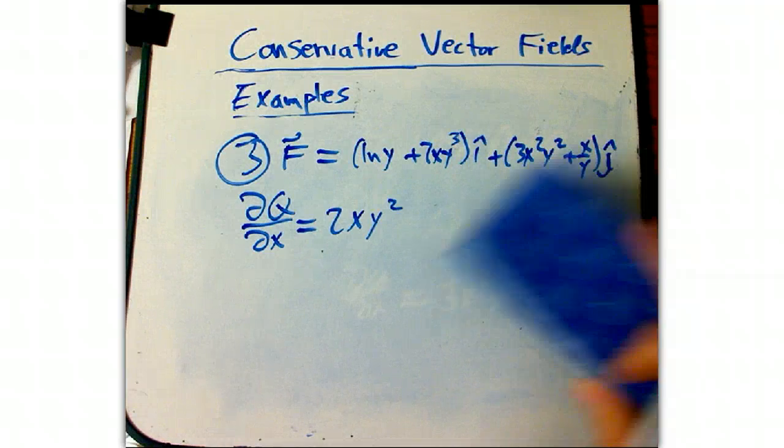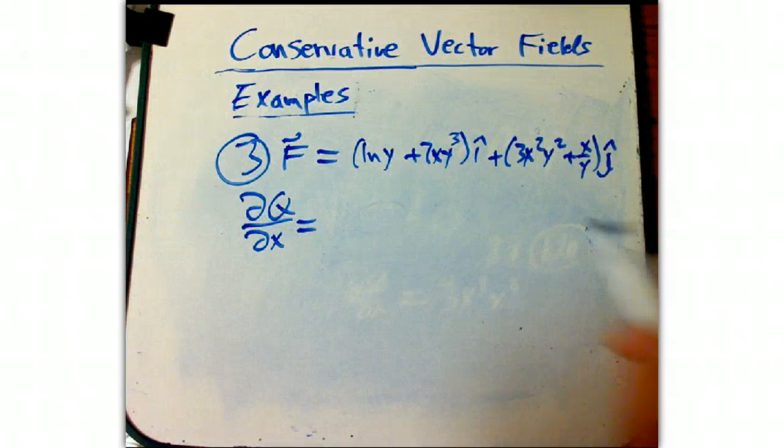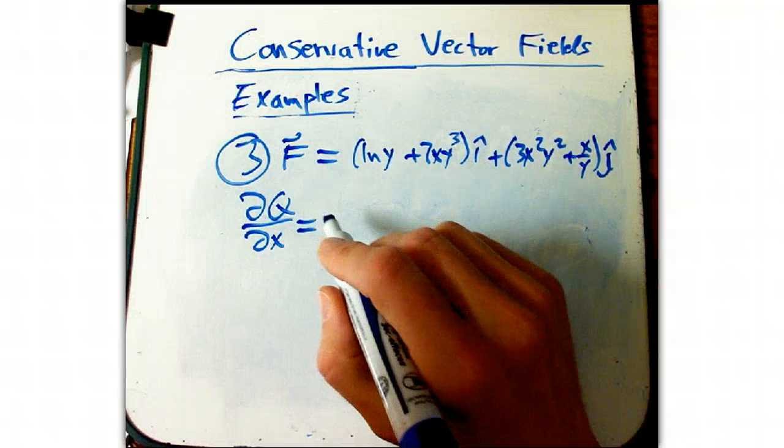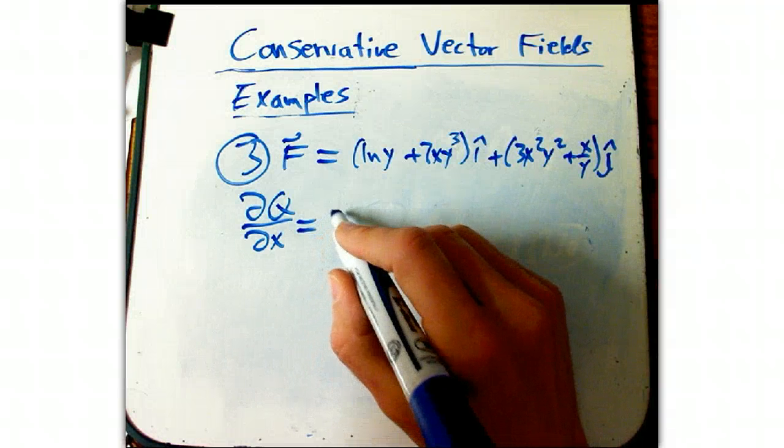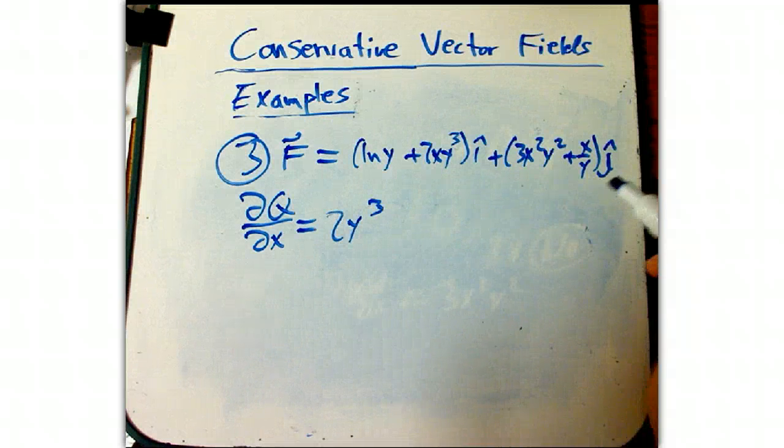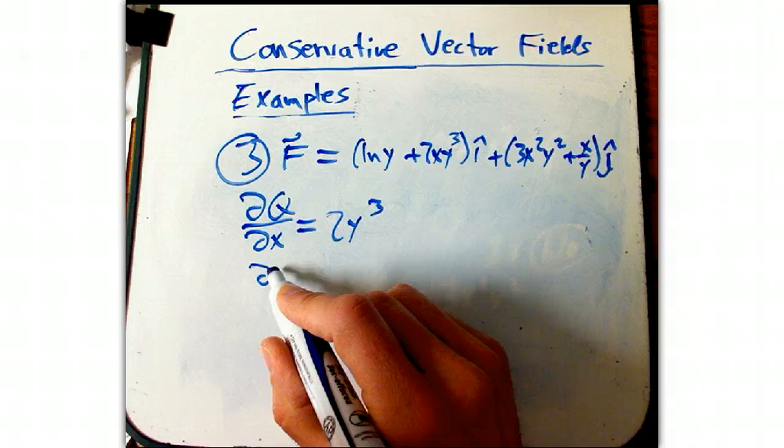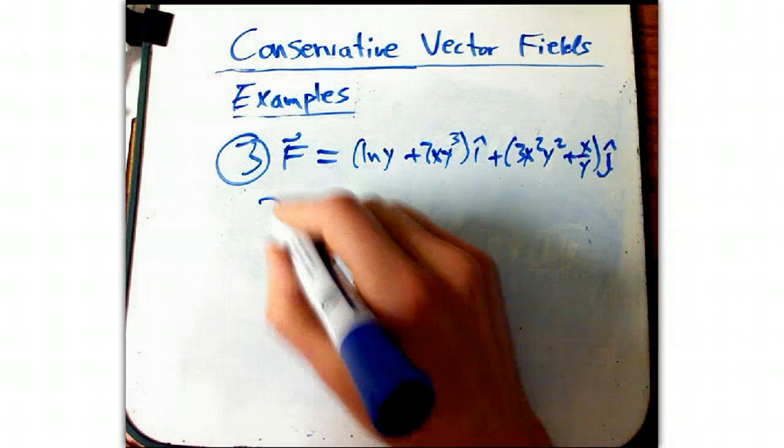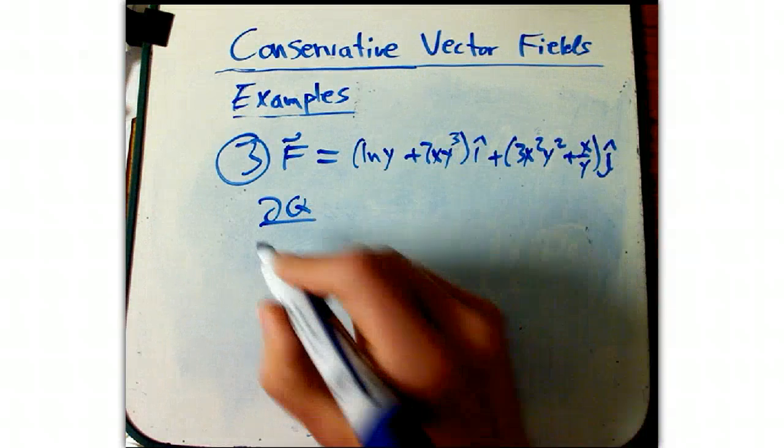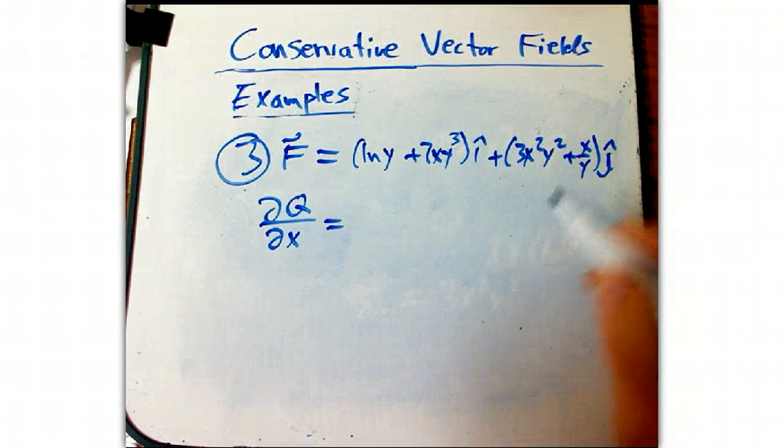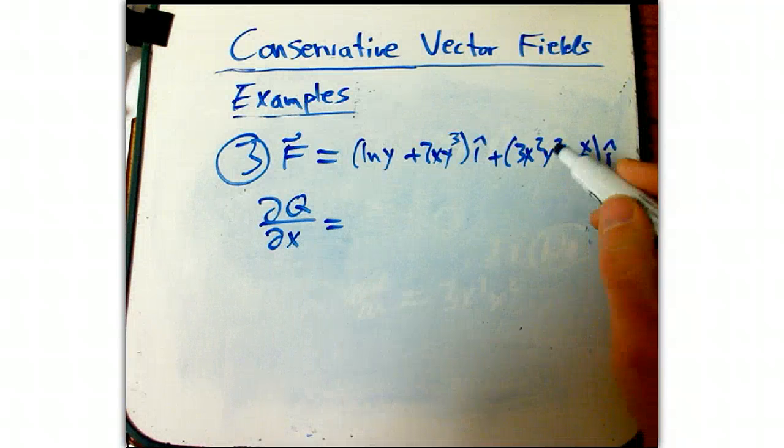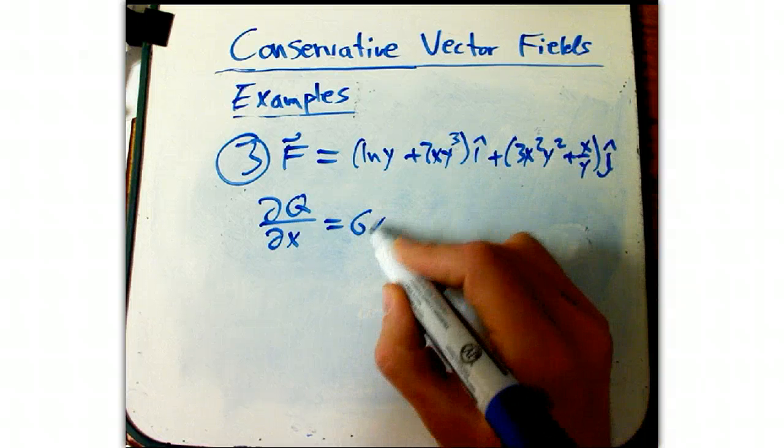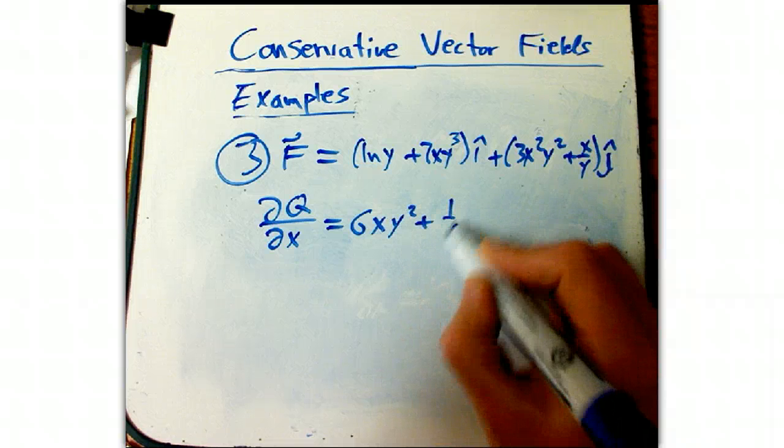So you can tell by the fact that I'm actually trying to be careful about this what the answer is going to be. Because if I didn't care whether it's conservative, if it was not conservative, I wouldn't have to be careful about it. So dQ/dx is 2y cubed. And dQ/dx. Sorry about the confusion. It's just late. dQ/dx. Here we go. 6xy squared plus 1 over y. There we go.